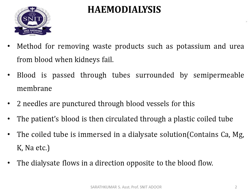In peritoneal dialysis, the peritoneum membrane helps in purifying the blood. In hemodialysis, it is a method for removing waste products such as potassium and urea from blood when the kidneys fail. Blood is passed through a tube surrounded by a semi-permeable membrane. The tube is immersed in a dialysate solution containing calcium, magnesium, potassium, sodium, etc.